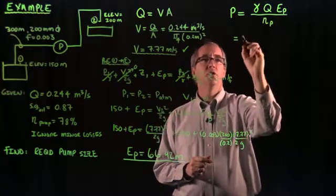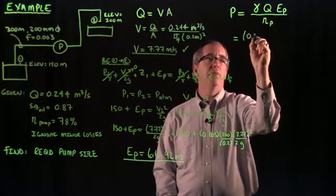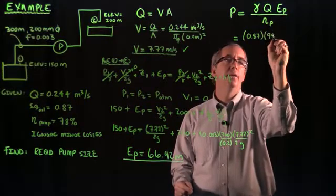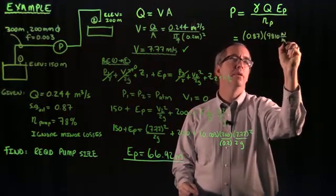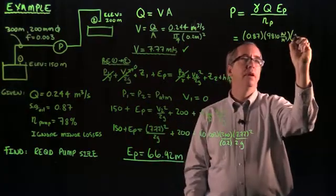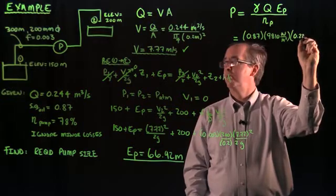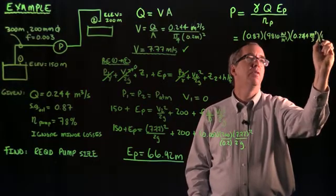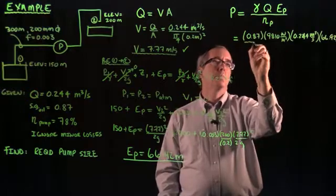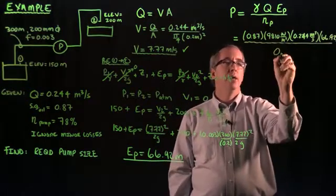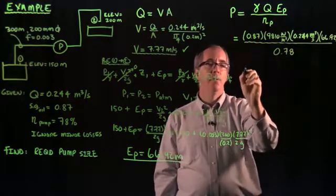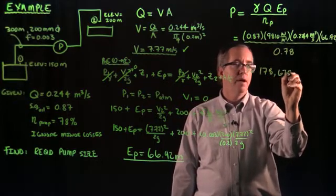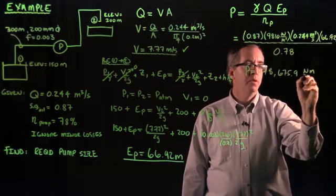So let's go ahead and substitute the terms in here. We've got oil, which has a specific weight of 0.87 times that of water. We're dealing with metrics, so that would be 9810, those are newtons per meter cubed. Our flow rate was given to us at 0.244 cubic meters per second. And then we just solved for that pump head at 66.92. We're going to divide that by 0.78, which is the efficiency of the pump. When we do that, we get 178,675.9 newton meters per second.